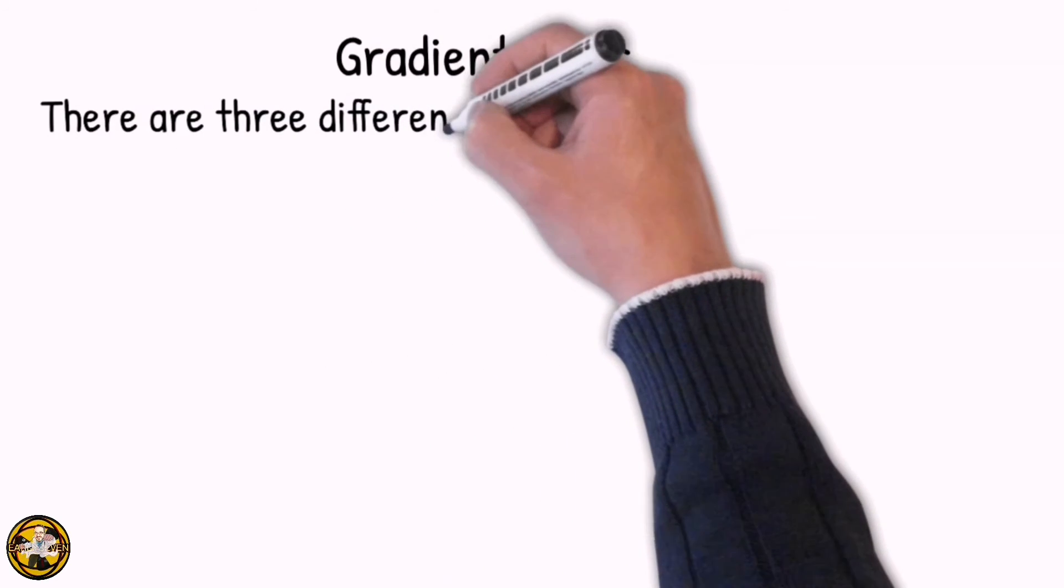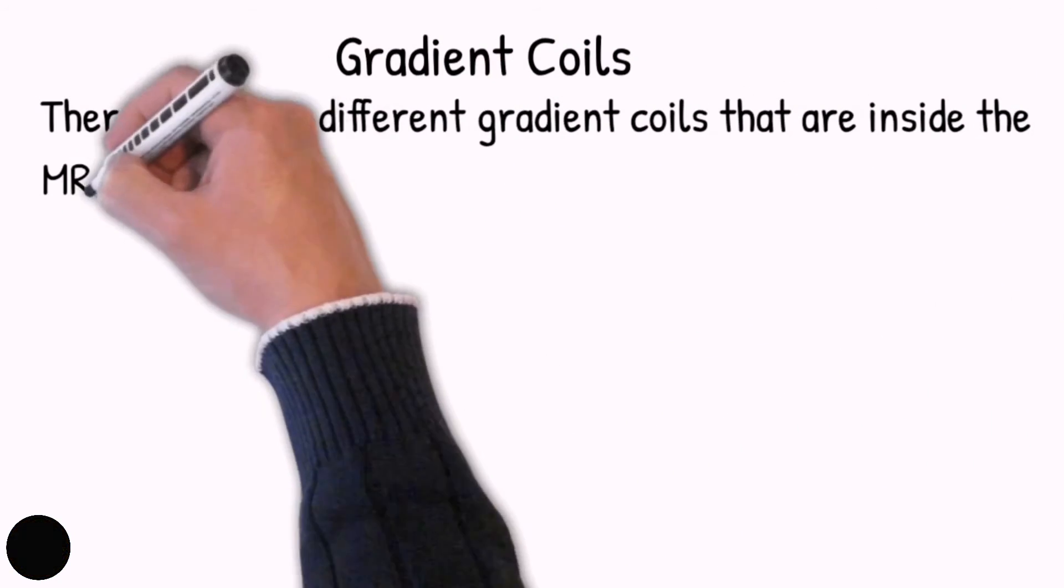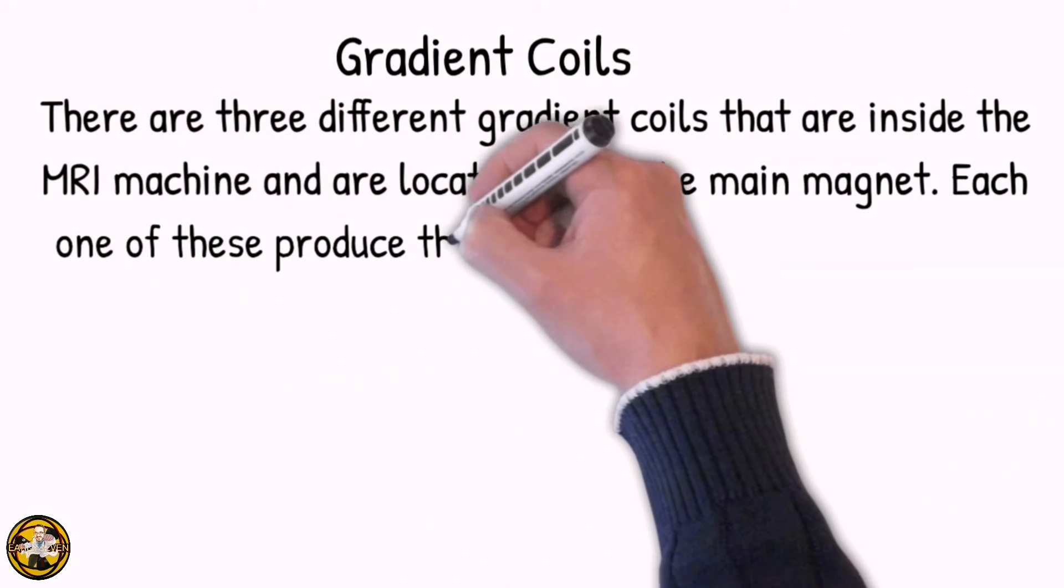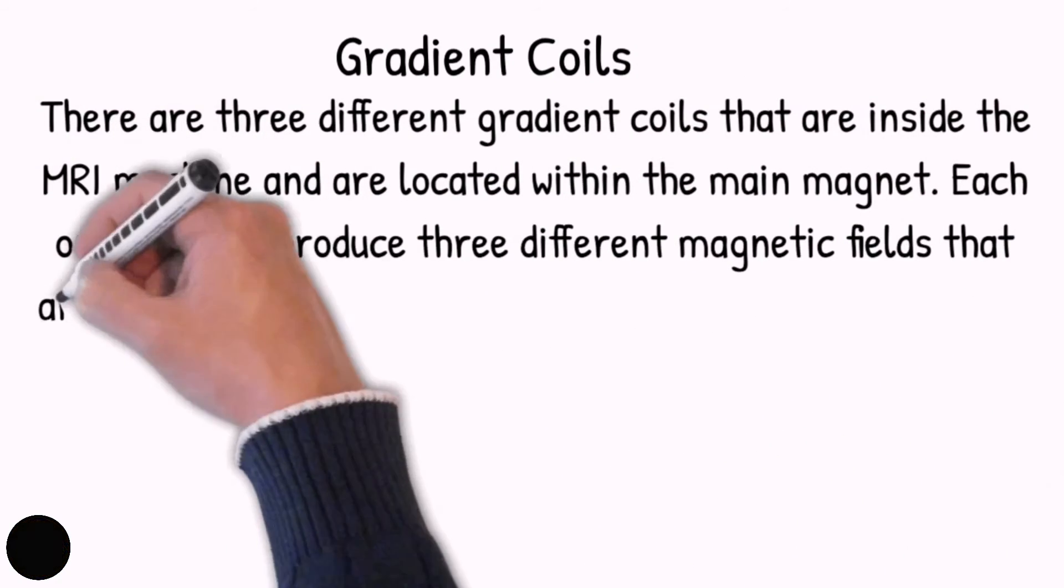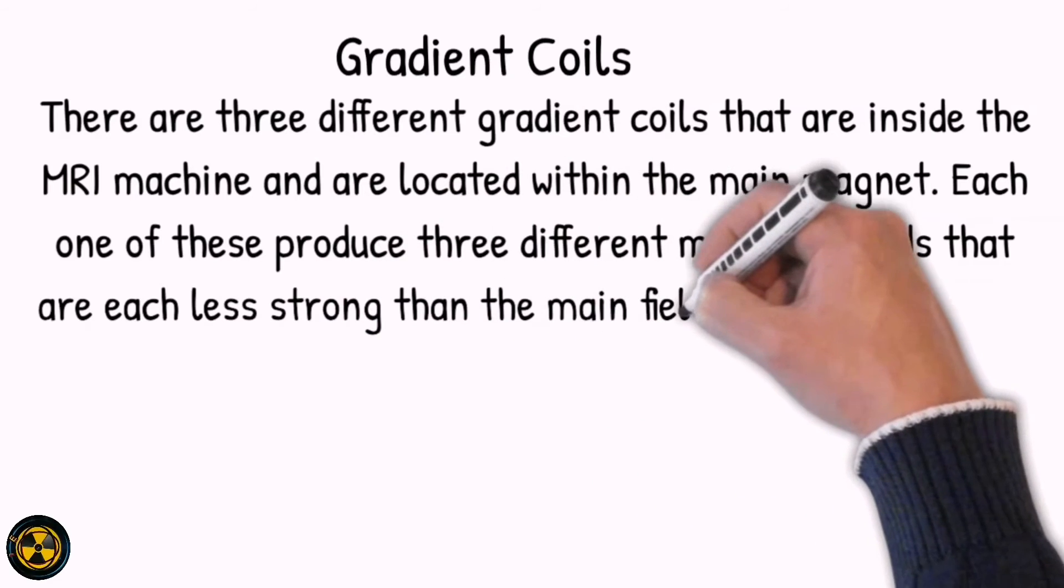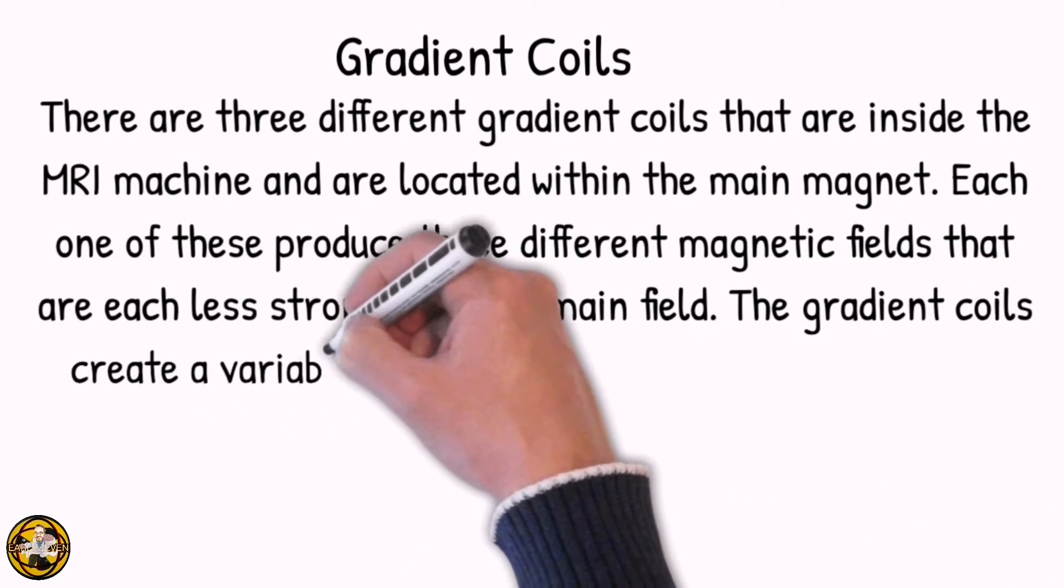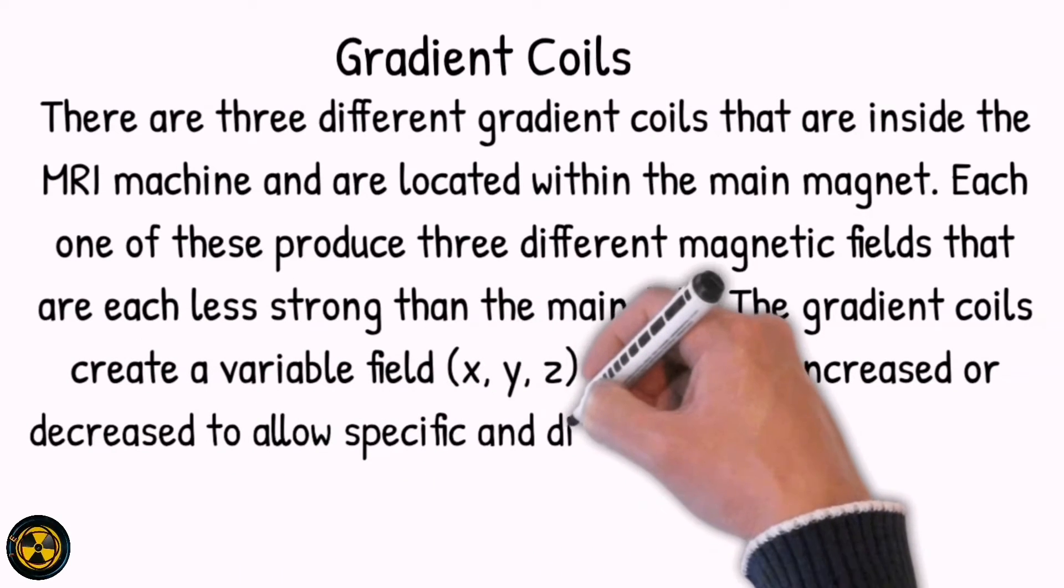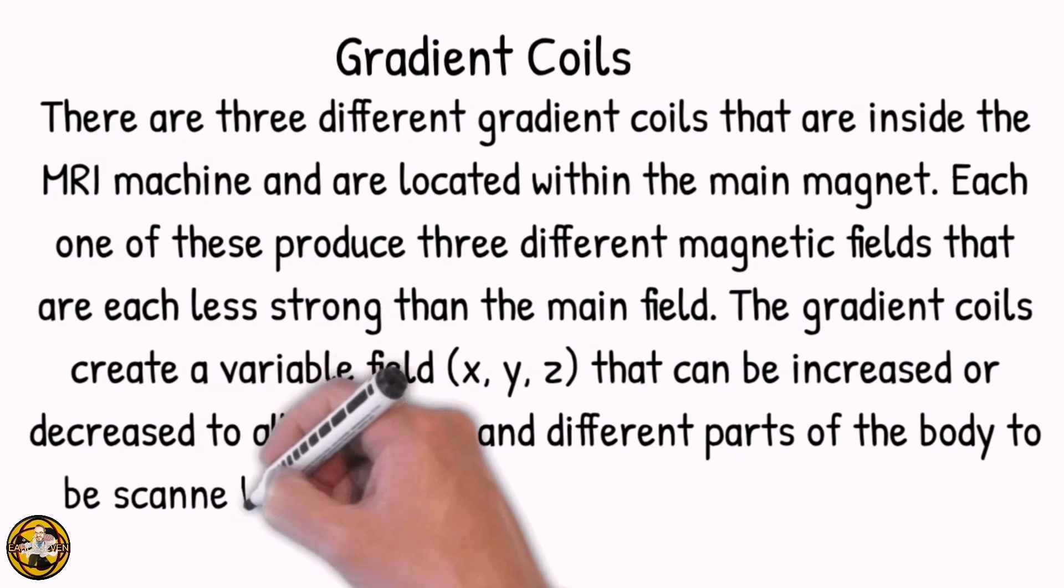The second component is the gradient coils. There are three different gradient coils that are inside the MRI machine and are located within the main magnet. Each one of these produces three different magnetic fields that are each less strong than the main field. The gradient coils create a variable field of X, Y, and Z that can be increased or decreased to allow specific and different parts of the body to be scanned by altering and adjusting the main magnetic field.